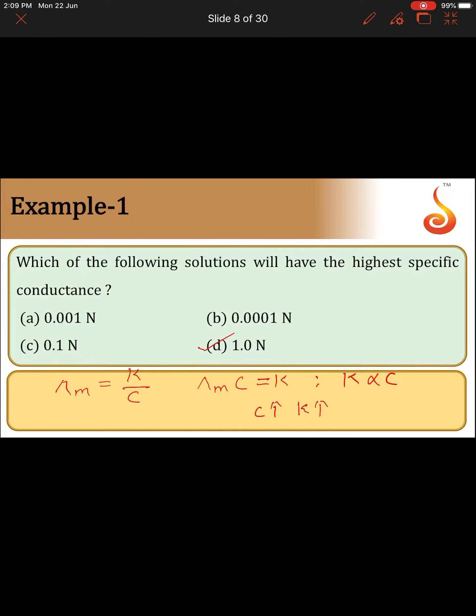One more point to add here: on dilution, the number of ions per unit volume that carry the current in a solution decreases. Because of this, on dilution concentration decreases. If the concentration decreases, conductivity or specific conductance also decreases. Remember this point also.